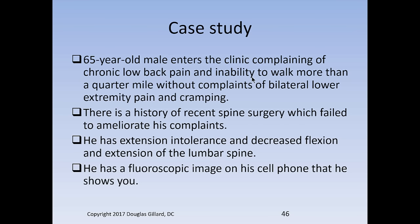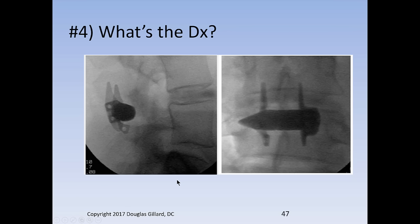Case study: 65-year-old male with chronic back pain, inability to walk more than a quarter mile without bilateral lower extremity pain and cramping. History of recent spine surgery which failed to ameliorate his complaints. He has extension intolerance, decreased flexion and extension of the lumbar spine. He brings in fluoroscopic images on his cell phone — what has happened here? That's an interspinous spacer device. The most common one used to be the X-stop.